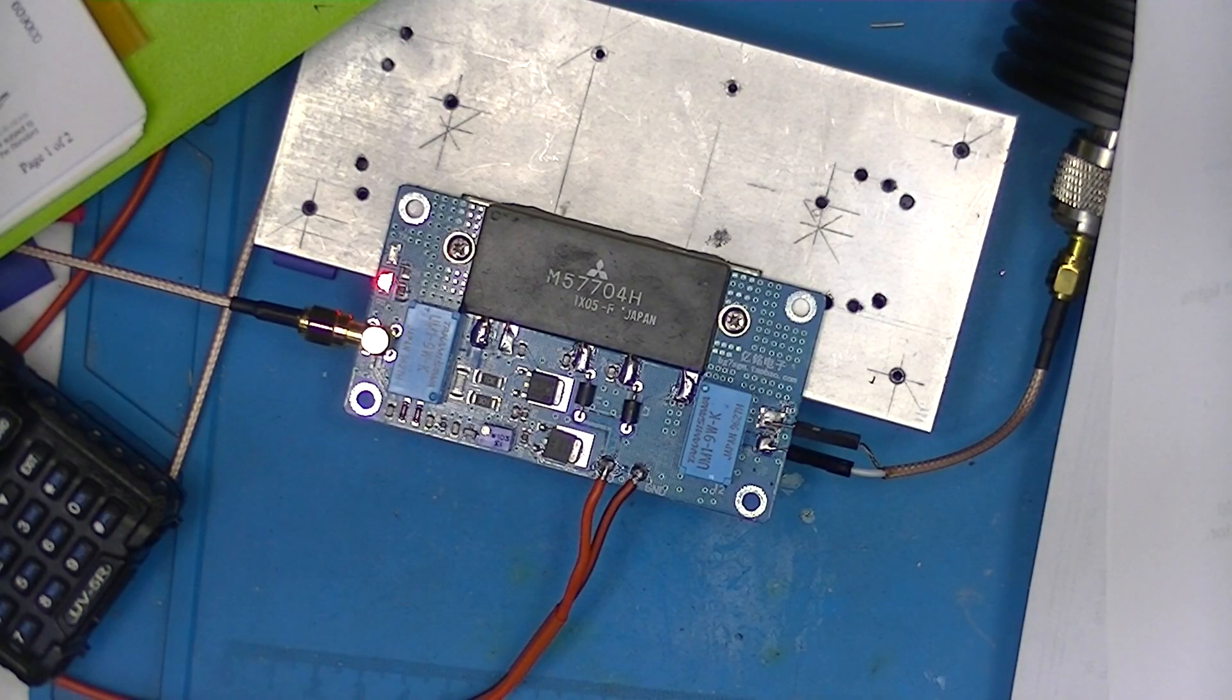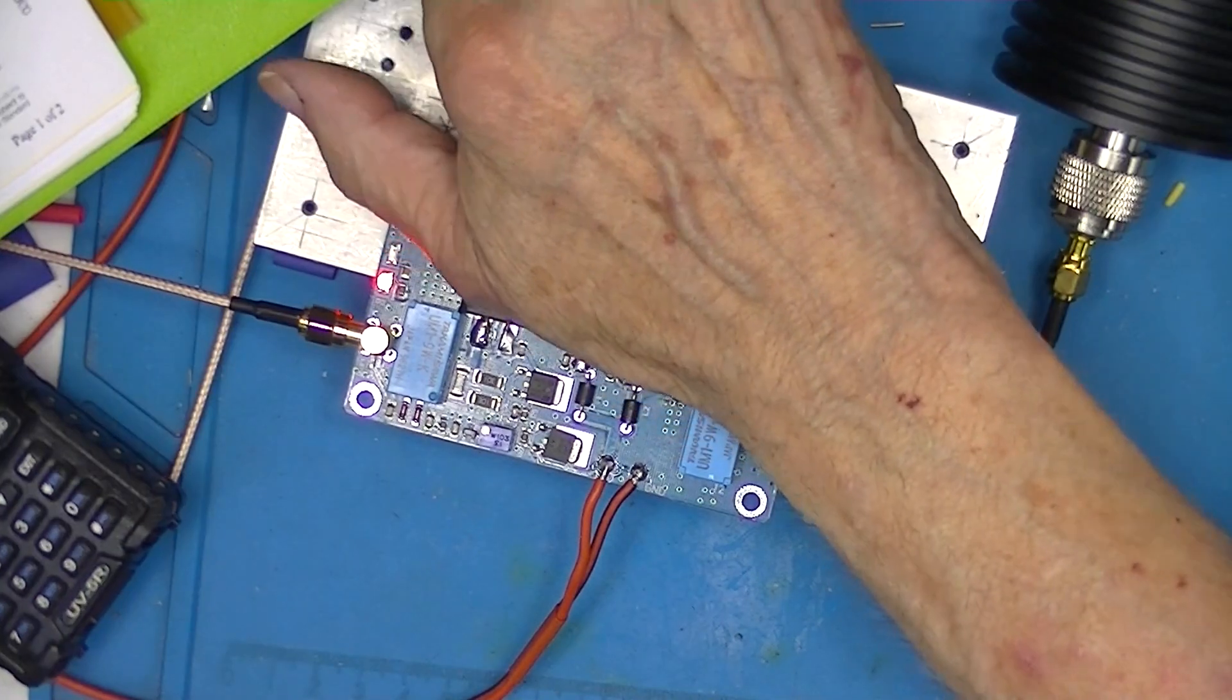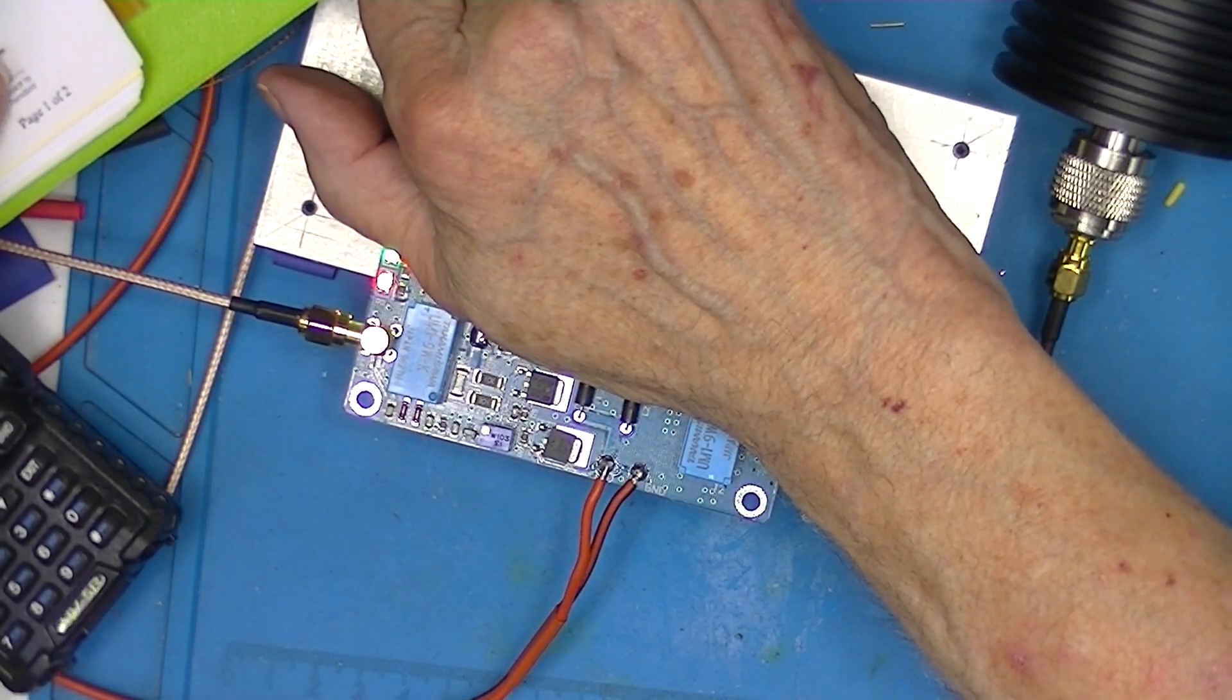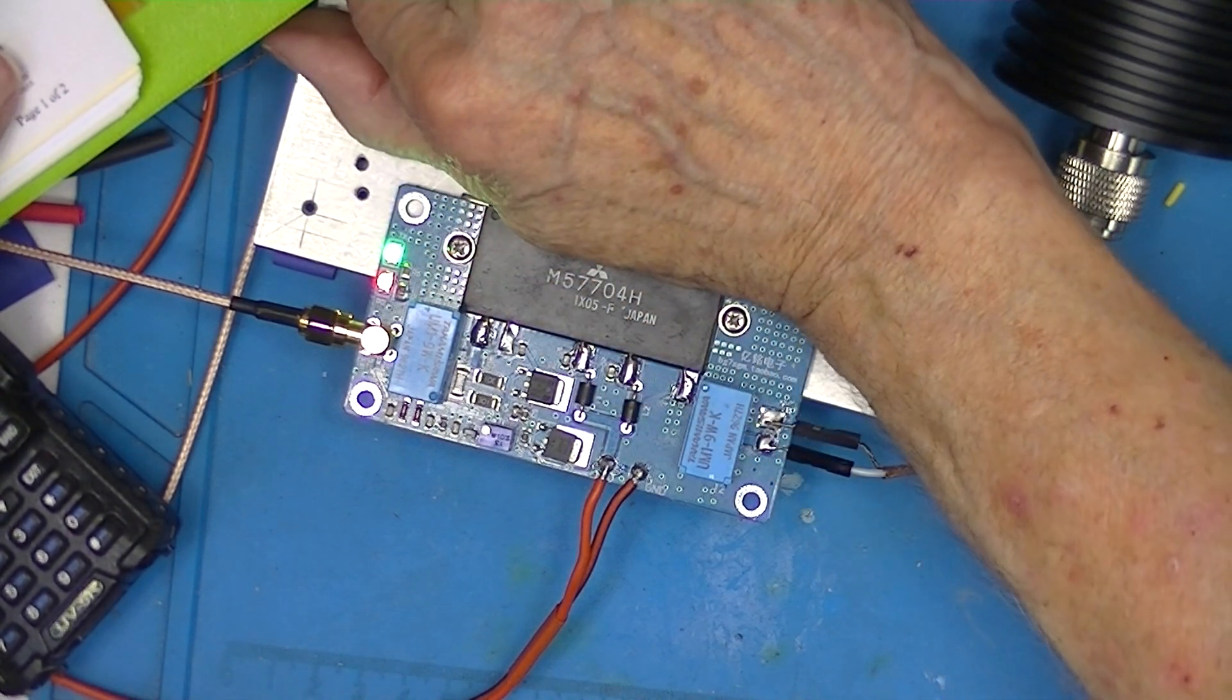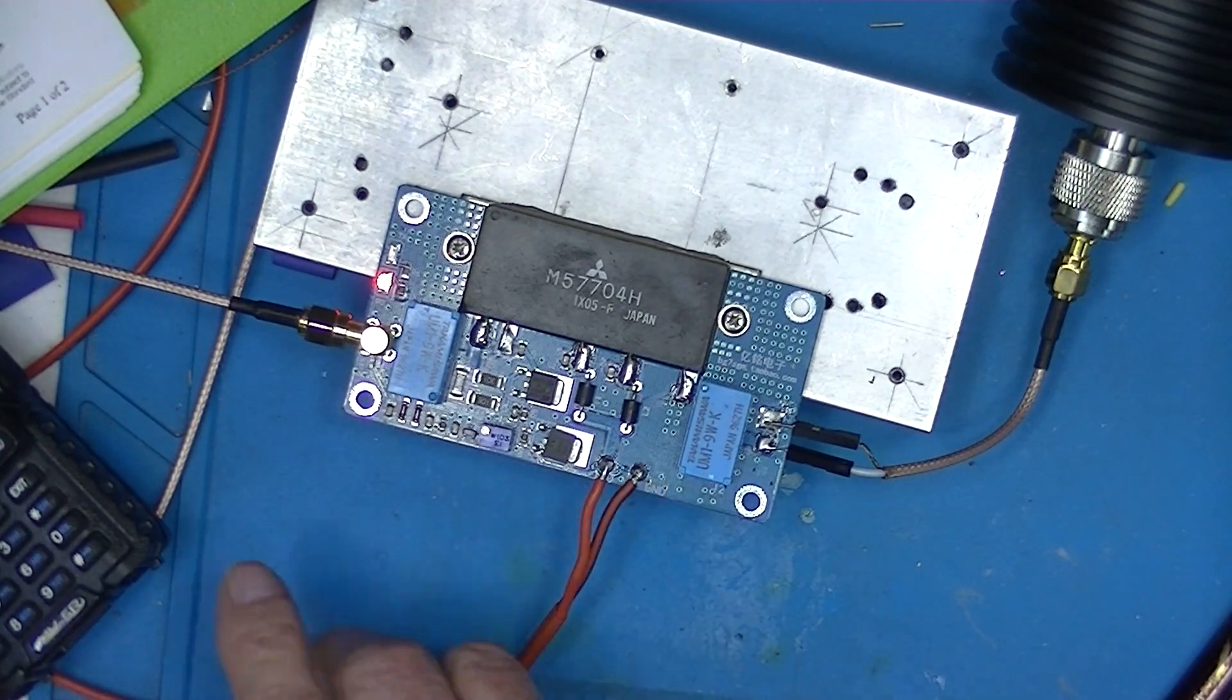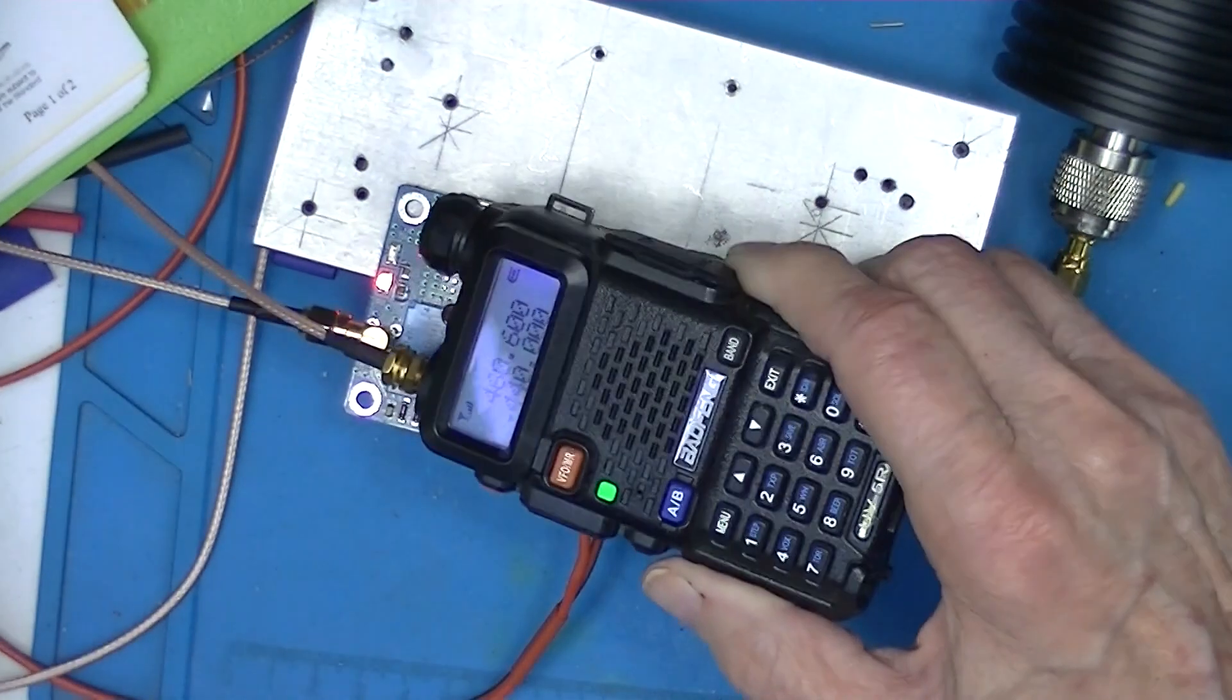Which should equate to 40 dBm of output, and that's equivalent to about 10 watts. I haven't keyed it up very long, but there's no heat felt in the heat sink. So there's a nice little amplifier for something like a Baofeng.